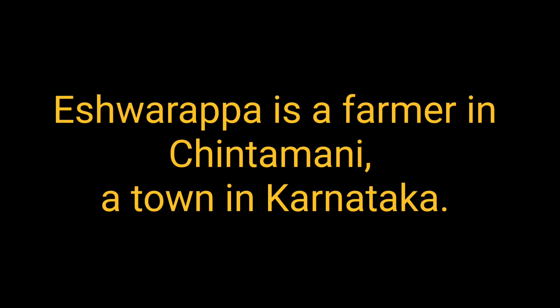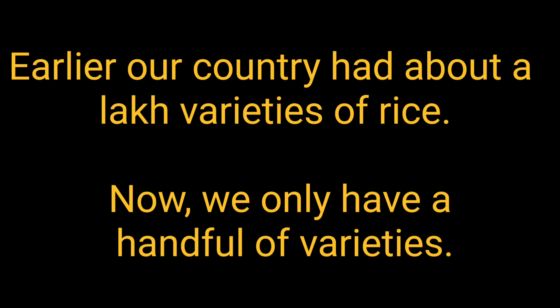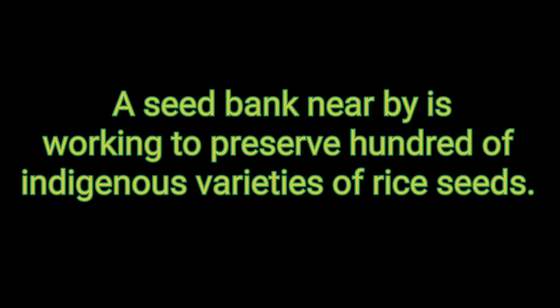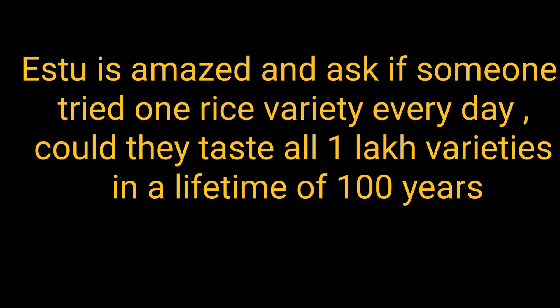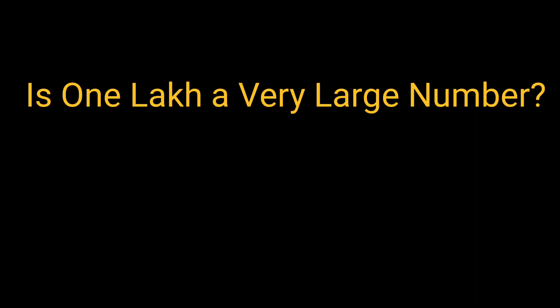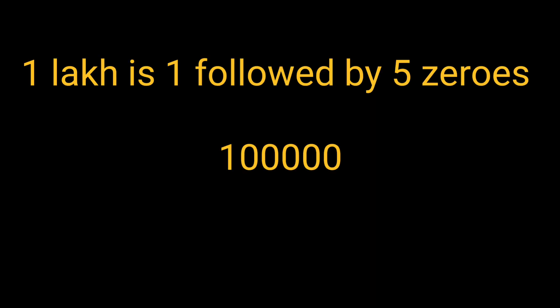There is a farmer named Ishwarappa who learns from his fellow villagers that India once had about 1 lakh varieties of rice, but now only a few remain. A seed bank nearby is working to preserve 100 of those indigenous varieties. Ishwarappa shared this with his daughter Roxy and son Estu. Estu is amazed and asked if someone tried one rice variety every day, could they taste all 1 lakh varieties in a lifetime of 100 years? This story connects math with real life, helping you understand how large 1 lakh is — 1 followed by 5 zeros — and get a feel for large numbers.